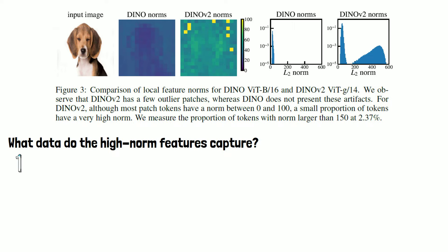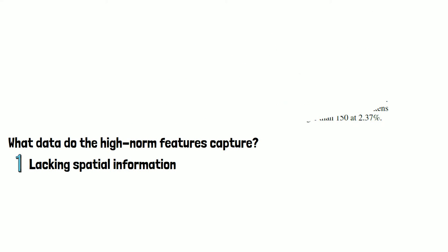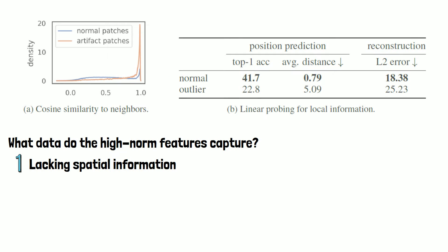The researchers investigated this and came up with interesting conclusions. First, the high-norm features contain less information about their position in the original image. Evidence shows that artifacts are located in patches very similar to their surrounding patches, confirming they appear in background locations. Additionally, researchers trained models to predict the original position of a token and to reconstruct the original pixels — in both cases, performance was worse for high-norm tokens, as seen in the paper's table. The second observation is that the artifacts hold global information.